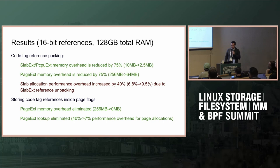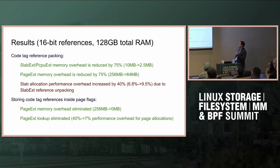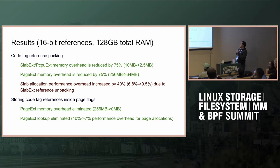With my proof of concept, I ran some tests. If we implement just code tag reference packing with 16-bit references, on a 128-gigabyte system we go from 10 megabytes for slab and page per-CPU extensions down to 2.5 megabytes — basically cut by four. Page extensions are also cut by four.